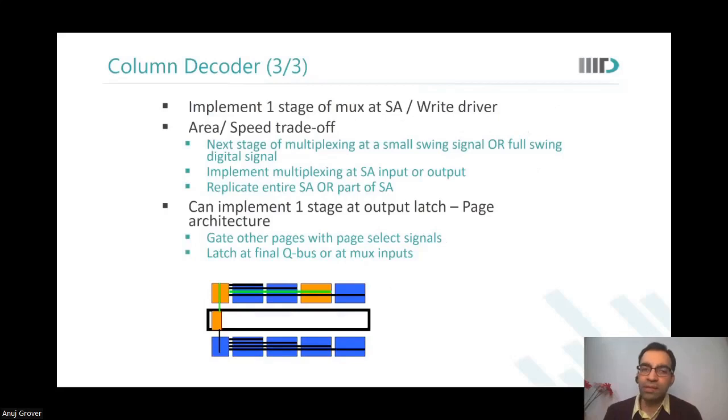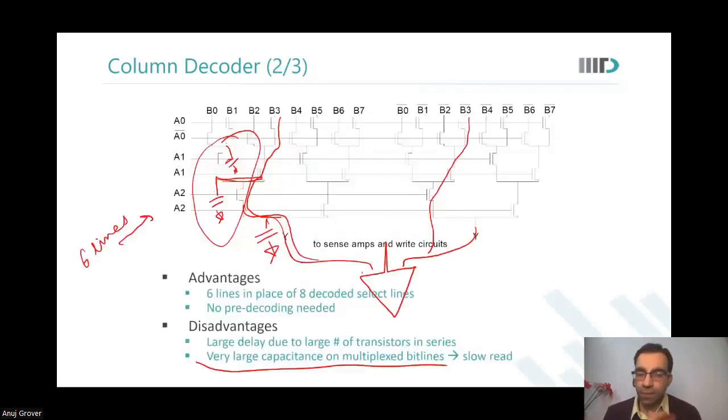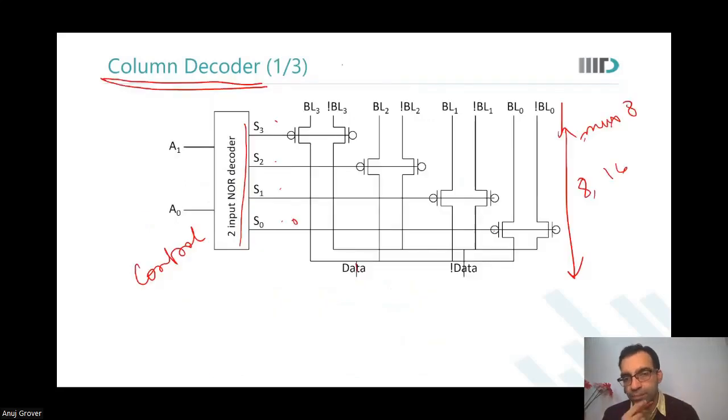So what is typically done is, you said earlier that PMOS is not going to put a strong zero, right? So why are we not using NMOS here with PMOS also? Yeah, you can, you have to use the NMOS. Also, you have to use transmission gates. I do not understand why we are not using this kind of column decoder. Who said we are not using? Did I say we do not use?